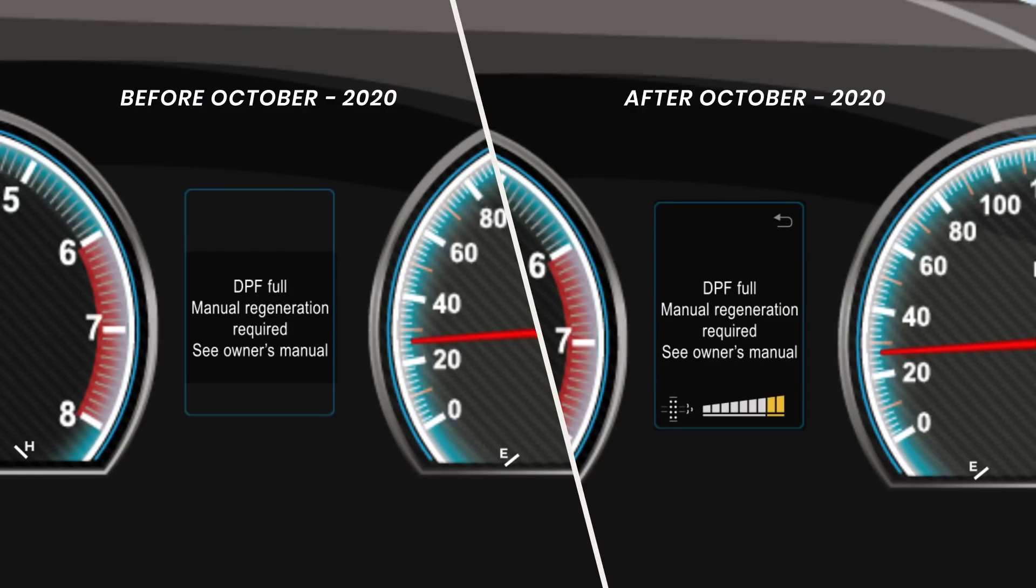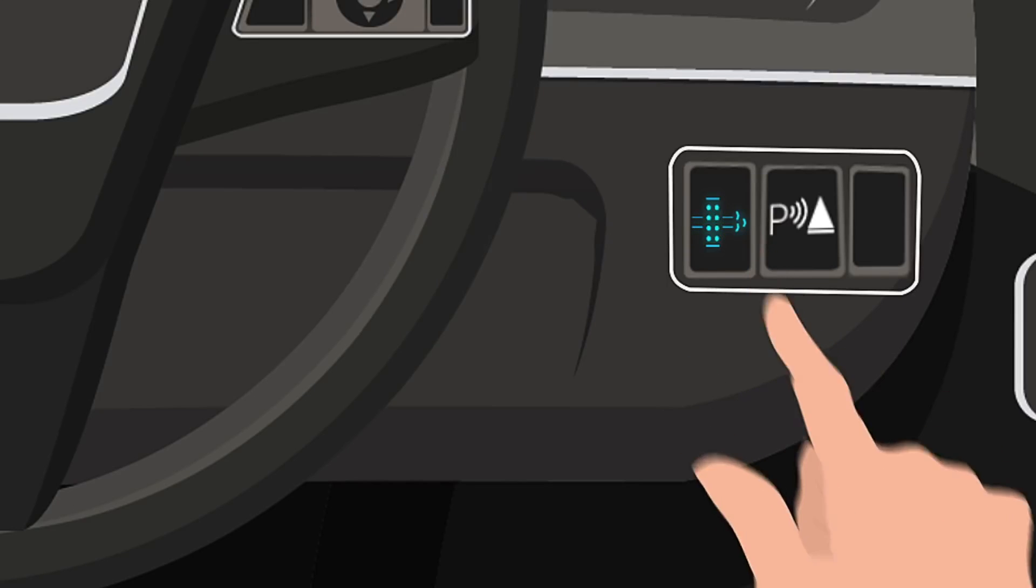To check the amount of accumulated deposit, press the DPF switch to read the level in the multi-information display.